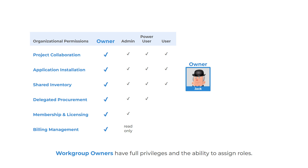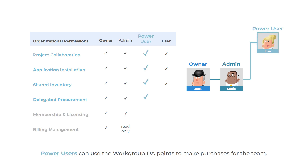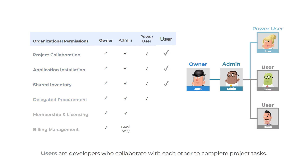Workgroup owners have full privileges and the ability to assign roles. Administrators have managerial permissions to operate the workgroup. Power users can use the workgroup DA points to make purchases for the team. Users are developers who collaborate with each other to complete project tasks.